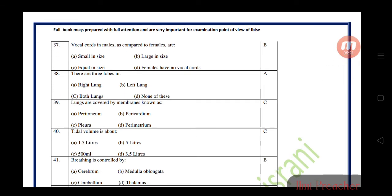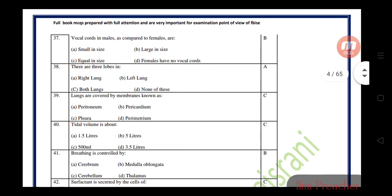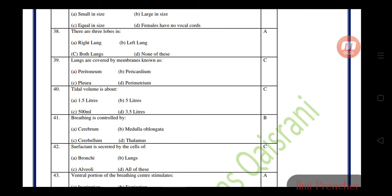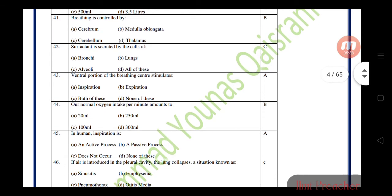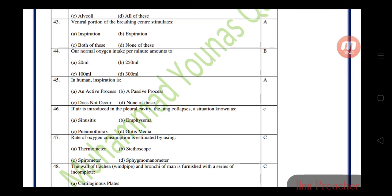Vocal cords in males compared to females are larger in size. There are three lobes in right lung. Lungs are covered by pleural membrane. Tidal volume is about 500 ml. Breathing is controlled by medulla oblongata. Surfactant is secreted by the cells of alveoli. Our normal oxygen intake per minute is about 250 ml.